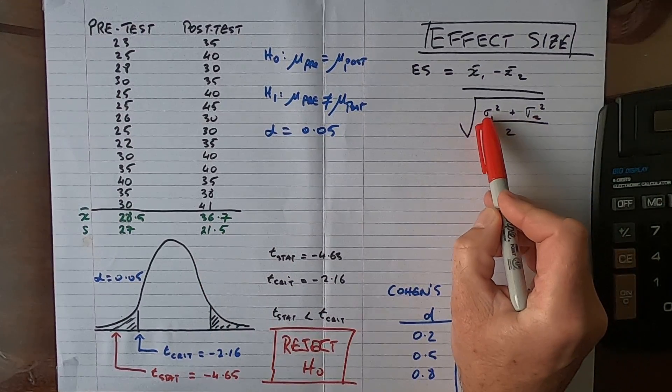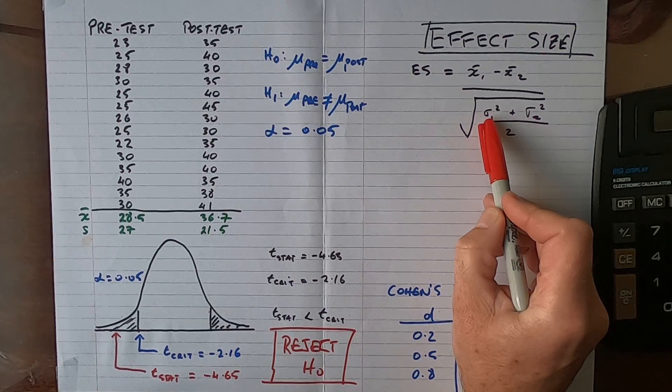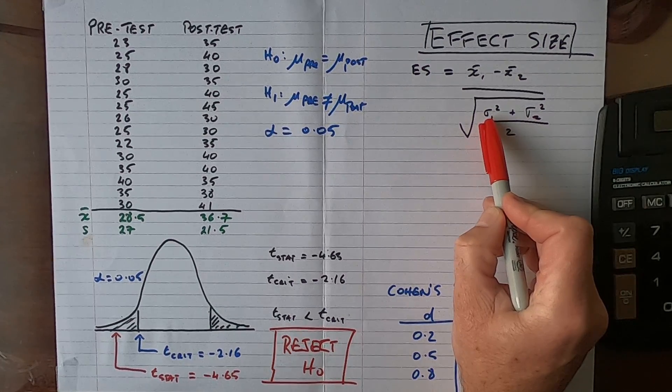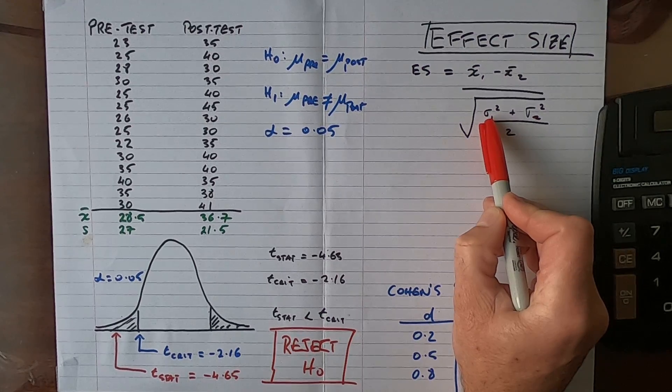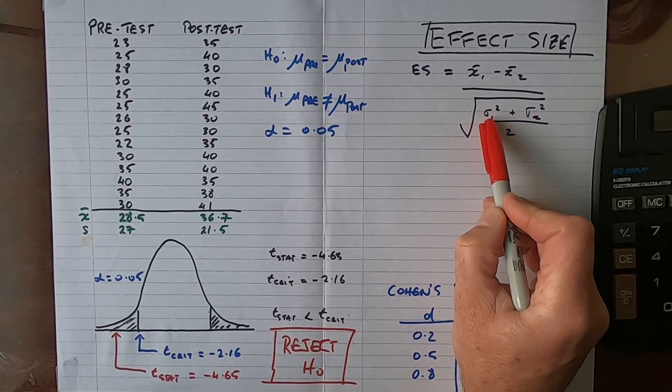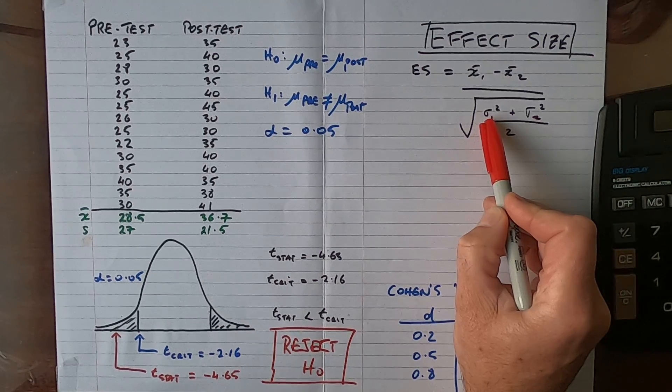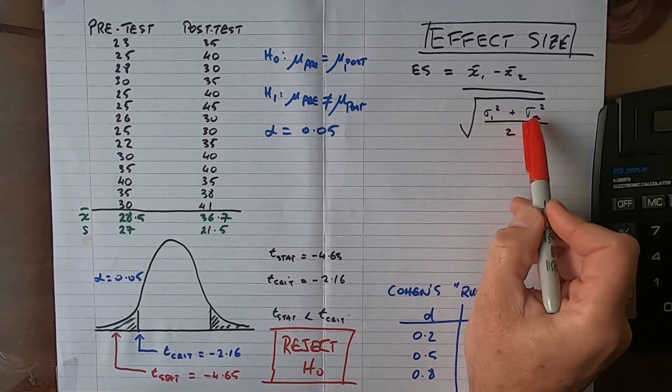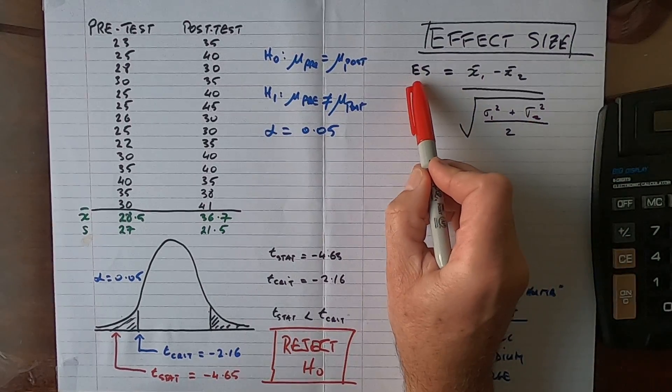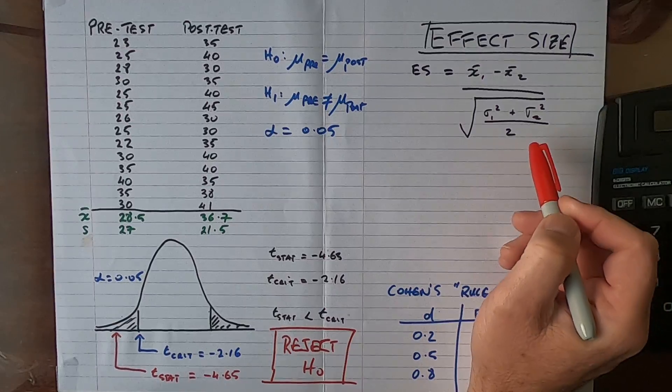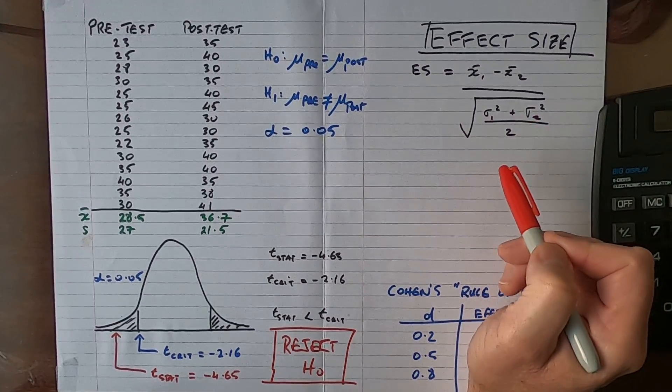Note that the sigma symbol here indicates the population variance. We don't know what the population variance is, so we substitute the sample variance as it gives us a good unbiased estimate of what the population variance is going to be. That also means this is going to be an estimated effect size.